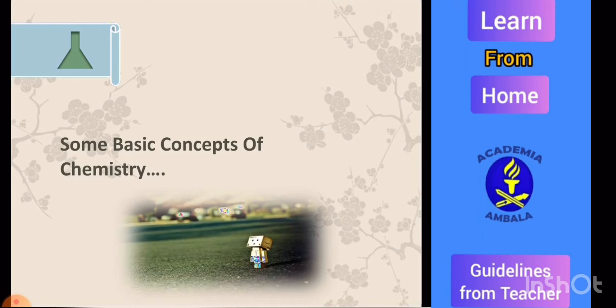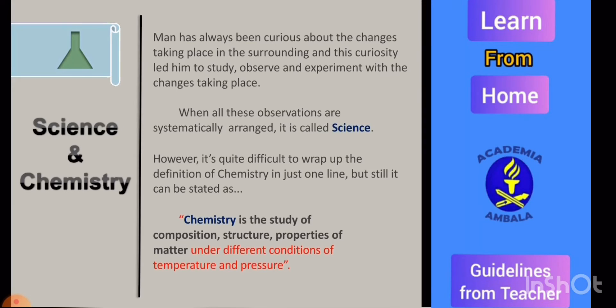Let's start with the topic science. Science is the systematic arrangement of observation, experimentation, and their results which human beings do to know the things or changes around us. Chemistry is the part of science which deals with study of matter, its structure, its property under different conditions of temperature and pressure. It also deals with laws governing these changes.